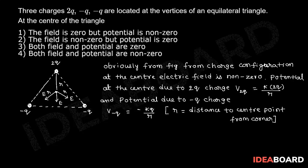Therefore, total potential V is equal to V_2q plus V_-q plus V_-q. The total should be equal to 0. Total potential is equal to 0.